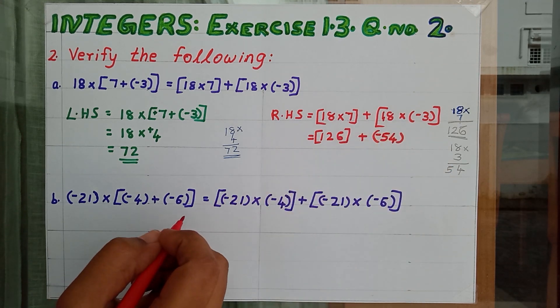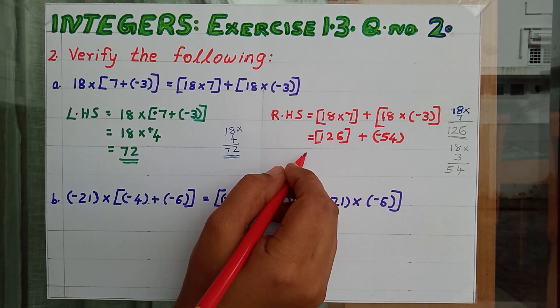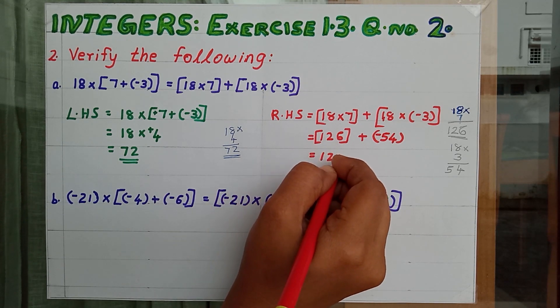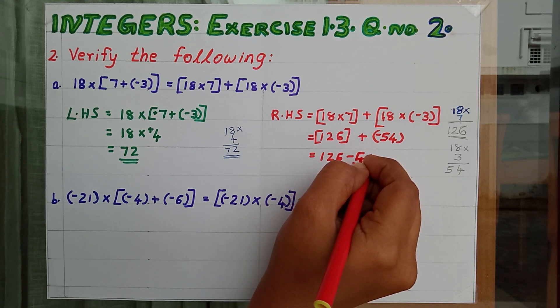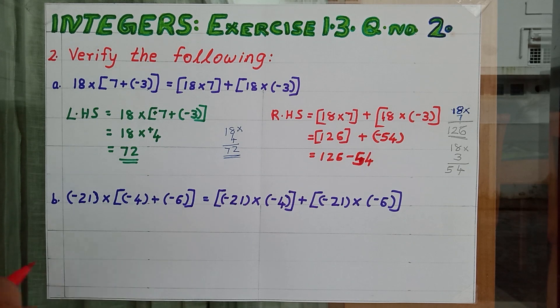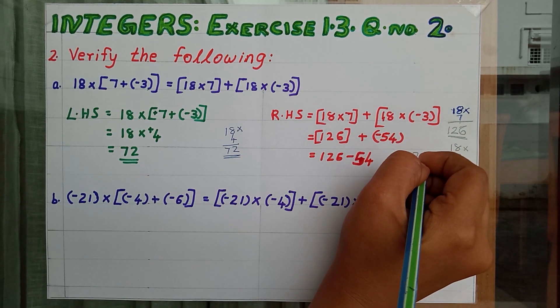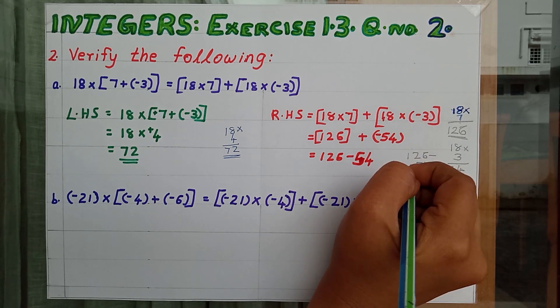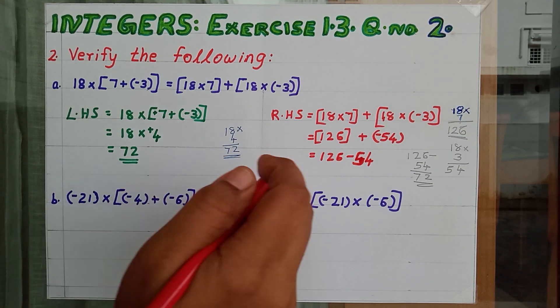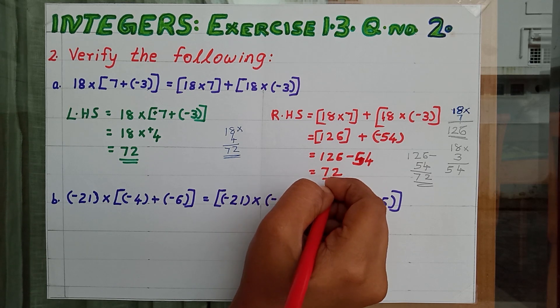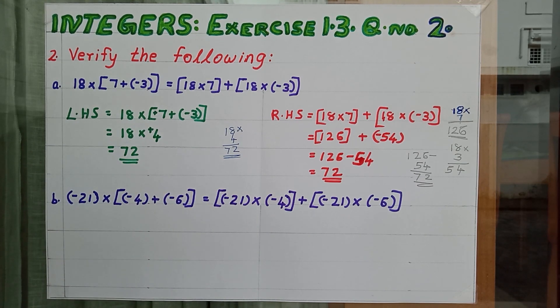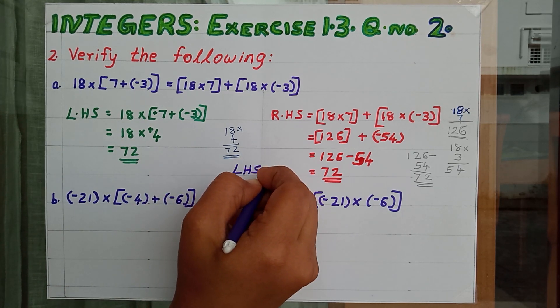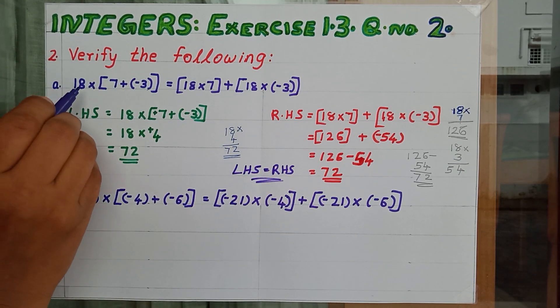Don't forget to put the sign. Then your answer will be wrong. So 126 plus minus of 54. That means 126 minus 54. 72. RHS is 72. LHS is also 72. So our conclusion is LHS equal to RHS. So we verified this statement.